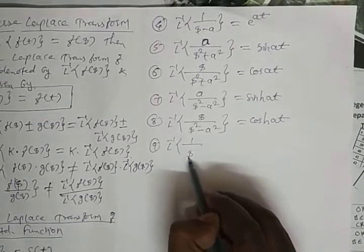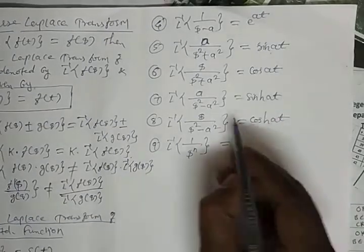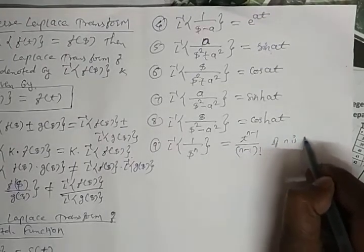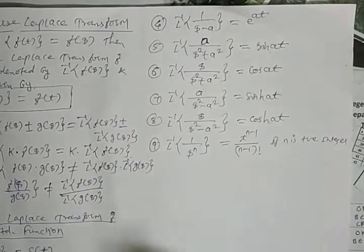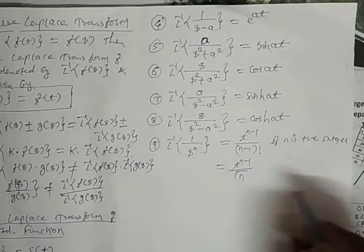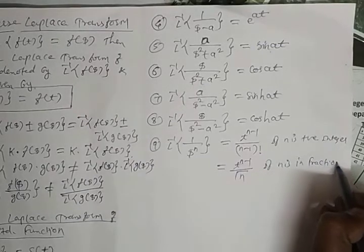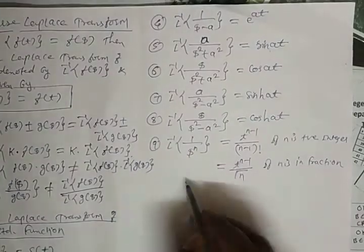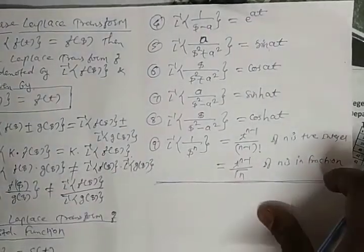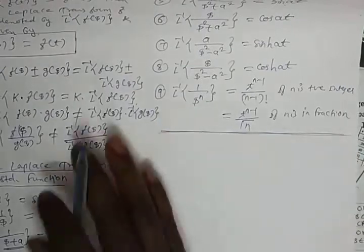The ninth formula is very important: L⁻¹{1/sⁿ} has two cases. If n is a positive integer, it equals t^(n−1) / (n−1)!. If n is a fraction, it equals t^(n−1) / Γ(n). These are the nine important formulas we must remember for solving numericals.